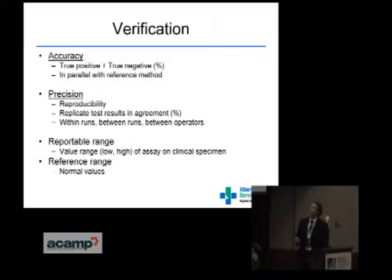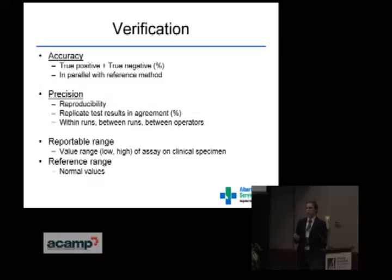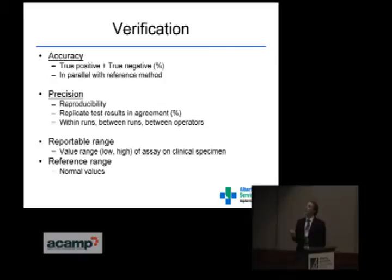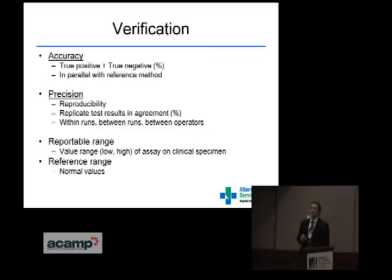The verification is really what I want to draw your attention to, because this is probably very similar to your approach as a manufacturer for how to meet Health Canada and FDA requirements for your medical device application. In my practice, at minimum I have to satisfy accuracy and precision. Accuracy is the rate of true positive and true negative values in any head-to-head comparison of your test method versus your reference standard. Precision — reproducibility — is how confidently the test can reproduce the same result, whether within runs, between runs, or between operators.